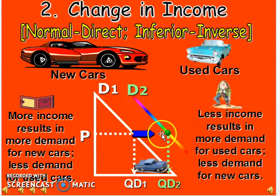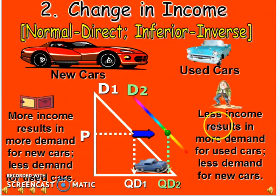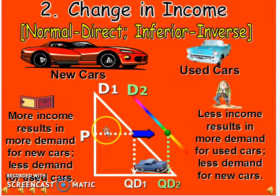For normal goods like new cars, the price of the new car remains the same, but as the consumer's income increases, the demand shifts from D1 to D2 — the demand curve shifts rightward. If income decreases, it would have the opposite effect, shifting D1 backward.